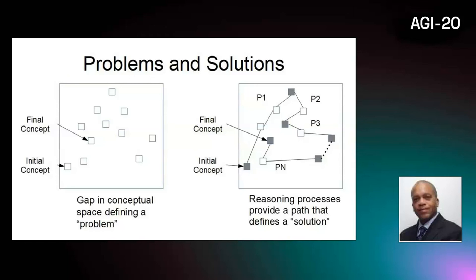From this perspective, general problem solving ability is the ability to navigate the conceptual space in a sustainable way so that it's possible to navigate from any problem to its solution. And in this simple functional model, motion through the human conceptual space in this globally stable way is human-like intelligence.